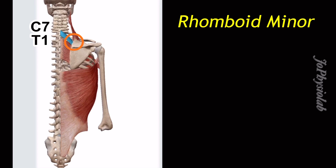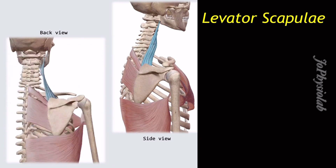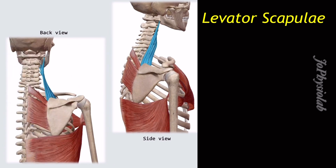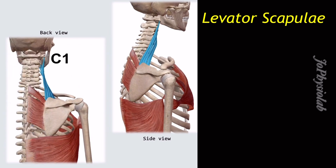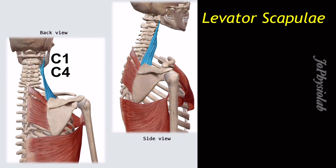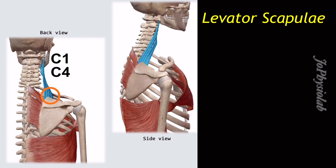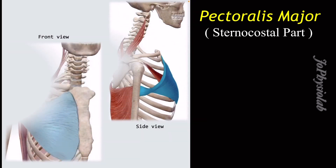The rhomboid minor inserts at the medial border of the scapula, above the scapular spine. The levator scapulae muscle attachment begins with C1 to C4 transverse processes of the vertebrae, and this muscle inserts from the medial border of the scapula, from the superior angle to the root of the spine of the scapula.